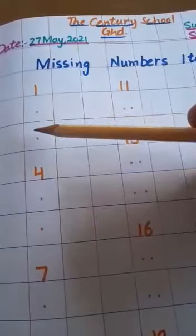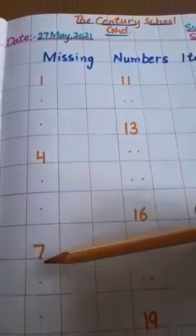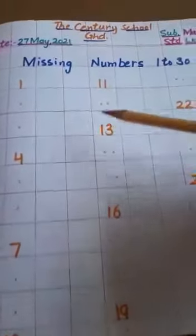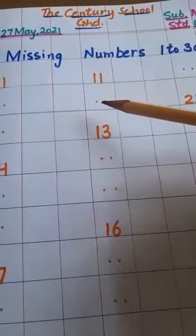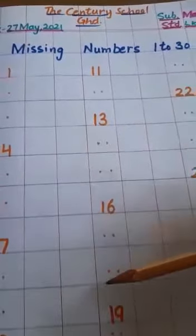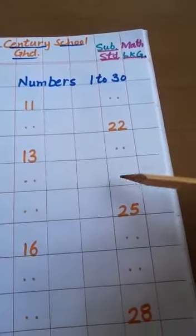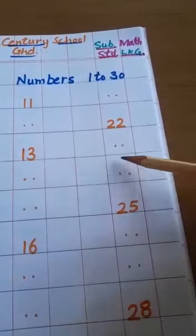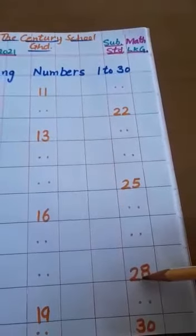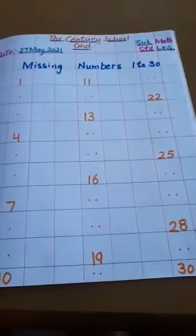In the first row: 1, then 2 numbers are missing, then 4, then one missing, then 7, then 10, 11, one missing, 13, then 16, then 19, then two missing numbers, then 22, then one missing, then 25, then 28, then 30. Students, these numbers are missing.